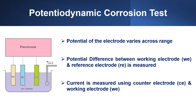Potentiodynamic refers to a polarization technique in which the potential of the electrode is varied over a relatively large potential domain at a selected rate by the application of a current through the electrolyte. The potential difference between the working electrode and reference electrode is measured, and the current is measured using the counter electrode and working electrode.